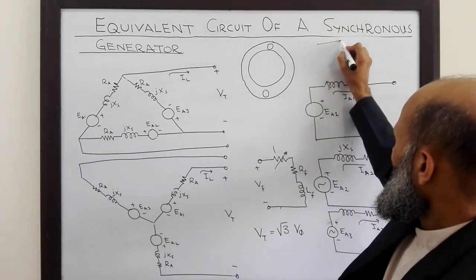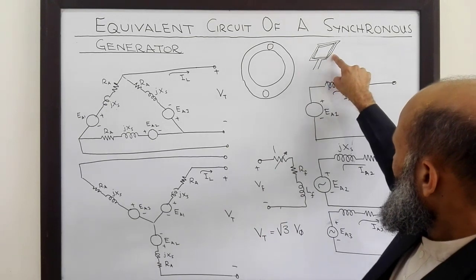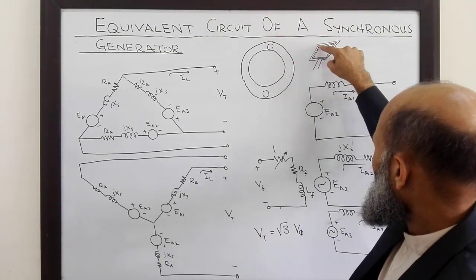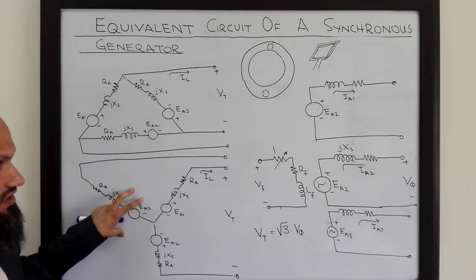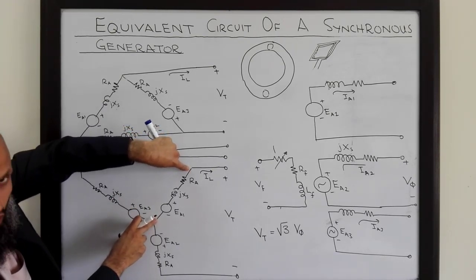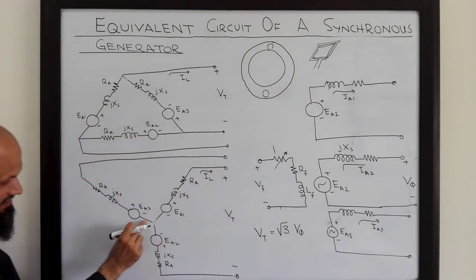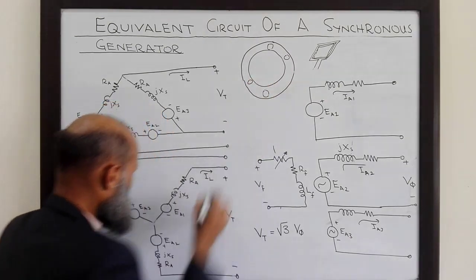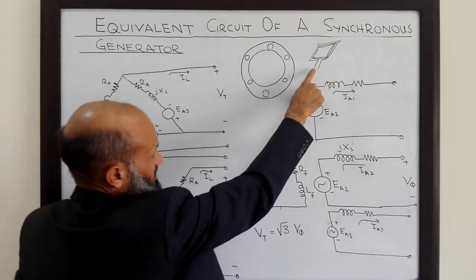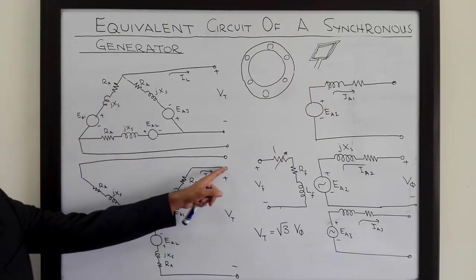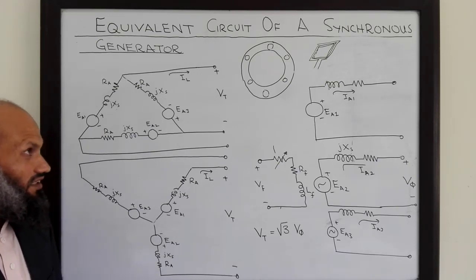Each coil has one side here and another side on the opposite side, with the front and back ends not shown. The diagram only shows the electrical connections — for example, for this coil, these two ends are connected: one end here and the second end connected to the second coil, and so on for the third coil. In star connection, one end of each coil is connected together at the neutral point. In the next lecture, we shall talk about the phasor diagram of the synchronous generator. Thank you very much.